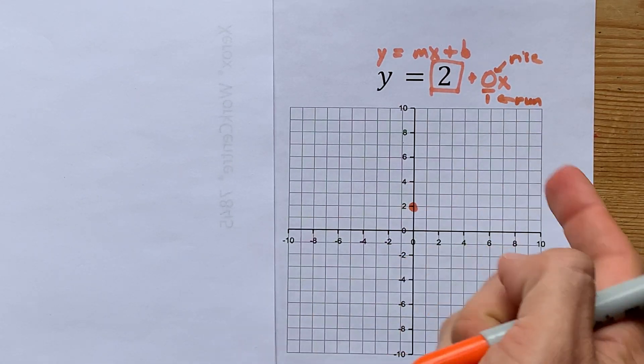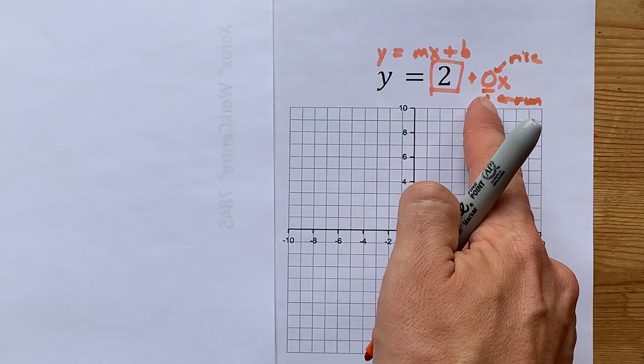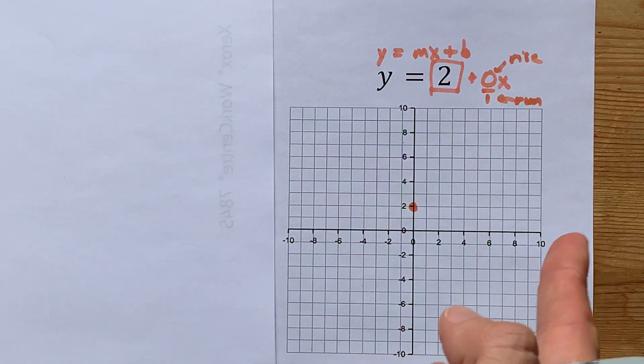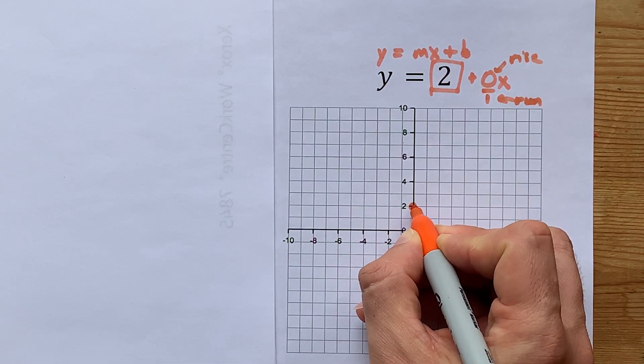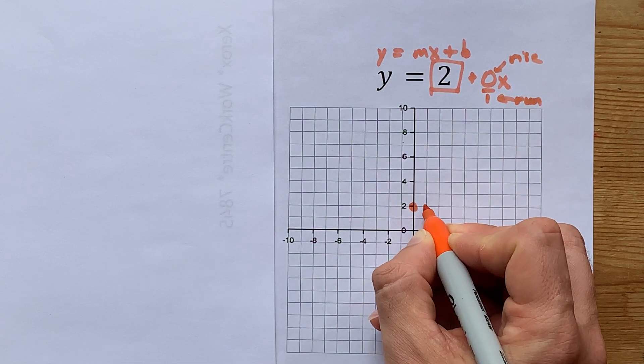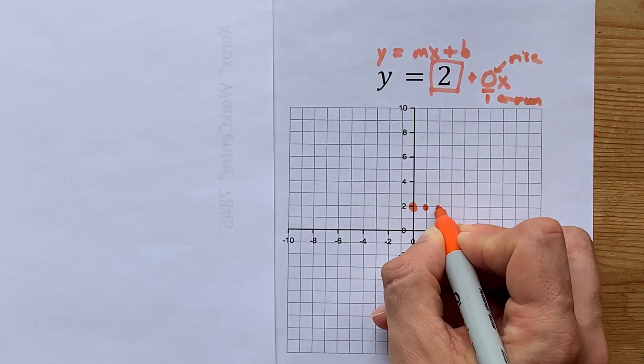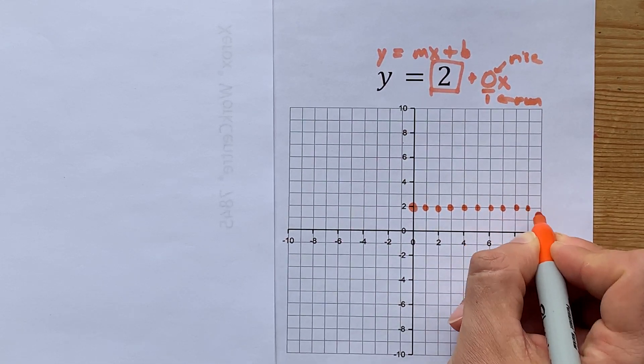To generate more points, we are going to rise 0 units and run 1, which means go to the right by 1. So from this point, I want you to go up 0 and then right 1. And then from there, up 0 and right 1. Up 0, right 1. Up 0, right 1, over and over again.